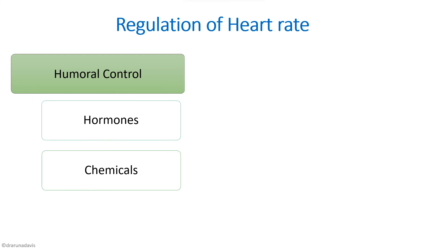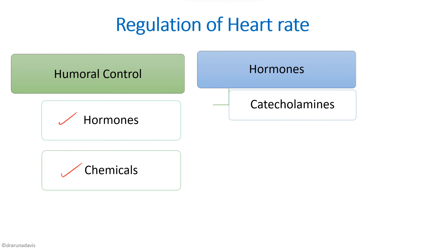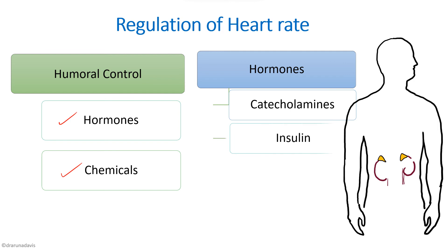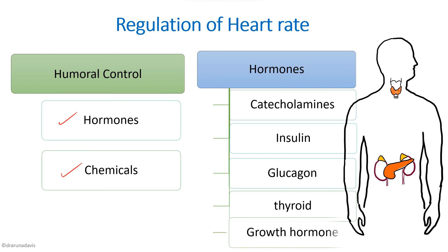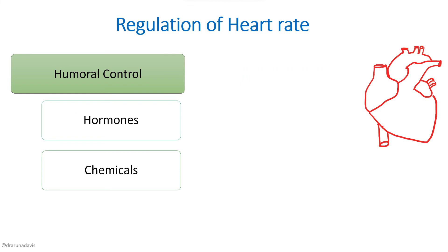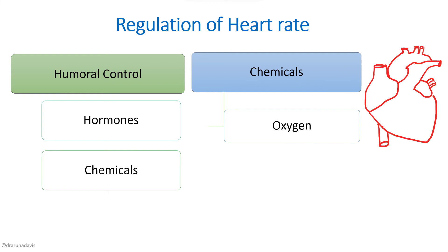Humoral control refers to the role of hormones and chemicals. The most important hormones are the catecholamines secreted by the adrenal medulla, followed by insulin and glucagon from the pancreas, thyroid hormones, and growth hormone from the pituitary — all of which generally increase heart rate. Regarding chemicals, mild hypoxia causes tachycardia, while moderate to severe hypoxia decreases cardiac output by suppressing myocardial contractility.